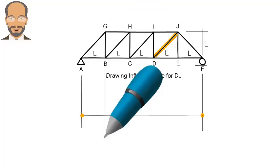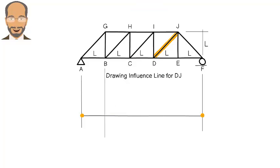To determine the height of the graph at B, we place the unit load at B. Then we calculate the axial force in member DJ. The fastest way to determine the force is to use the method of sections. First we are going to calculate the right support reaction, like this.